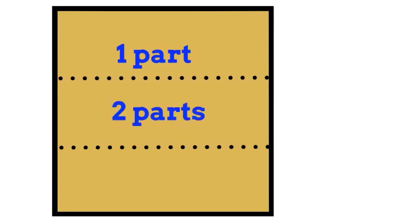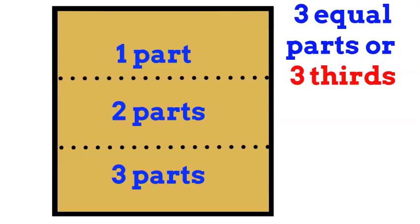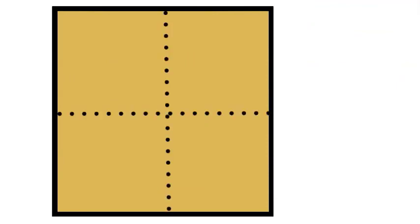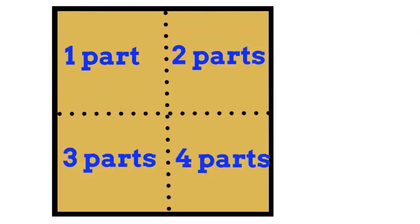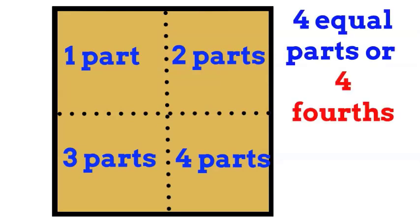If we cut the sandwich like this and this, we would have one part, two parts, three parts — three equal parts. We would say that's three thirds. Cut the sandwich another way and you would have one part, two parts, three parts, four parts. Four equal parts would be four fourths.